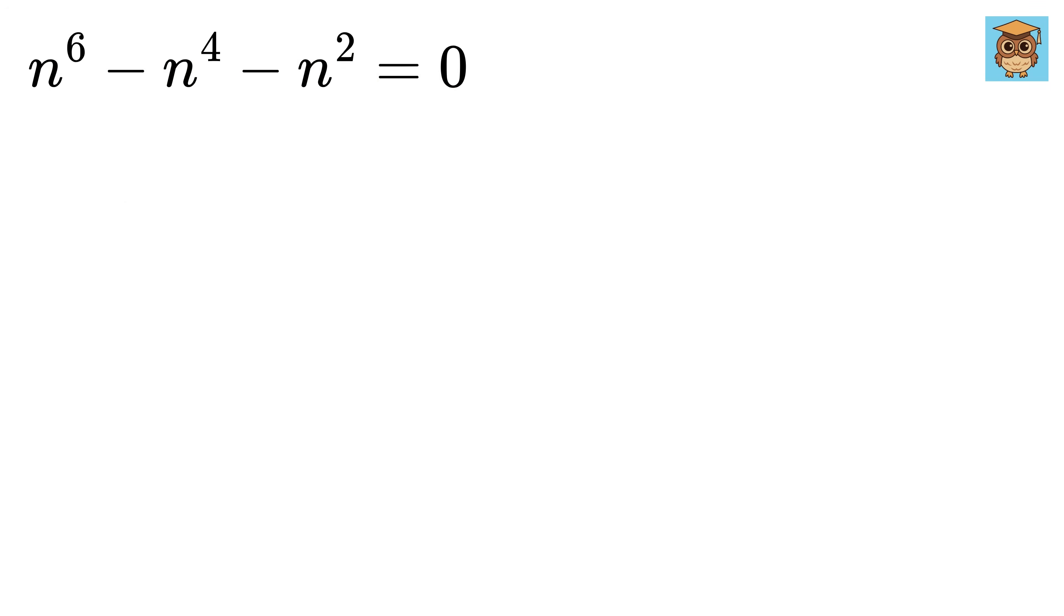Now we can take n square as common from here. Thus, n square times n raised to 4 minus n square minus 1 equals 0.